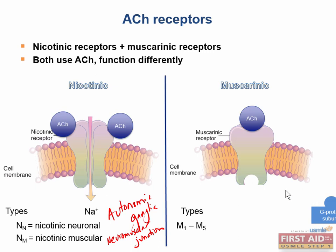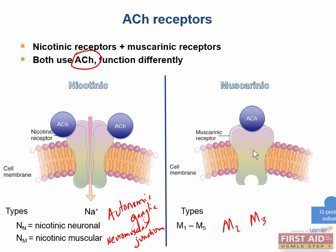There are five types of muscarinic subunits, M1 through M5. However, the M2 and M3 subunits are going to be the most important for Step 1. This slide is a good way to compare and contrast the mechanism of both the nicotinic and the muscarinic receptors: despite using the same neurotransmitter, acetylcholine, the nicotinic receptor acts as a channel, while the muscarinic receptor uses the G protein system.